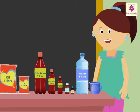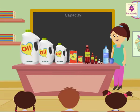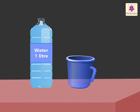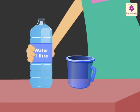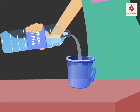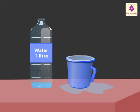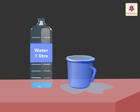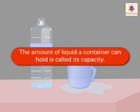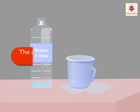Good morning children! Today, first let's revise capacity. Look, I have a bottle filled with water and an empty jar. Let's pour this water in the jar. Look, the water started overflowing and fell out of the jar. Hence we can say that the capacity of the bottle is more than the jar — that is, the bottle can hold more water than the jar.